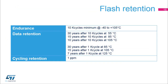The flash memory is guaranteed for a minimum of 10,000 cycles up to 105 degrees Celsius. Data retention is 30 years after 10,000 cycles at 55 degrees Celsius, 15 years after 10,000 cycles at 85 degrees Celsius, and 10 years after 10,000 cycles at 105 degrees Celsius.